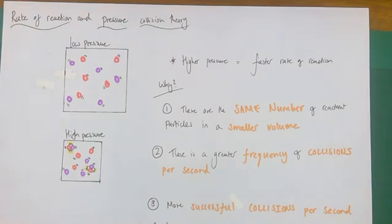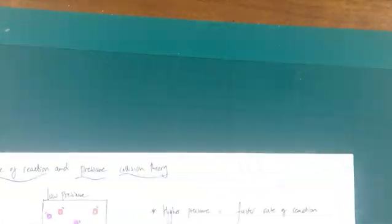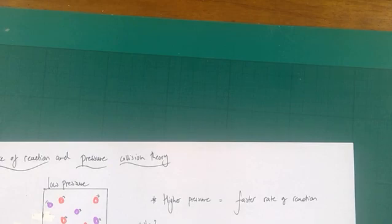And that smaller space is creating a greater frequency or number of collisions per second. So how to explain this in an I2C manner? We know that high pressure is creating a faster rate of reaction. Why?